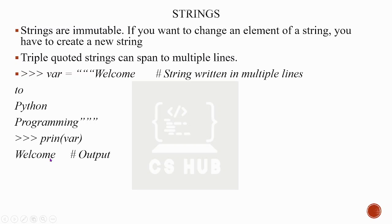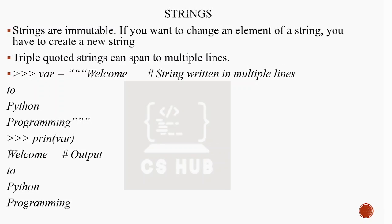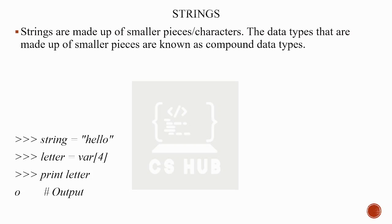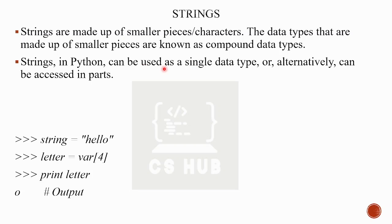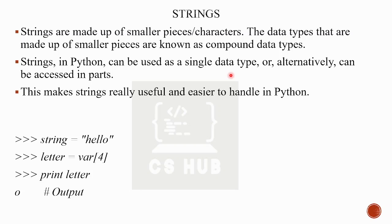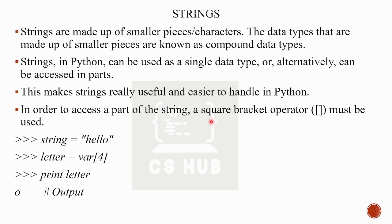Strings are made up of smaller pieces or characters. One character makes up a string. The string is a compound data type in Python. We use a single data element. We can use the string as a full entity or access parts of it. The string is easy to handle — we use indexes and the square bracket operator to access parts.